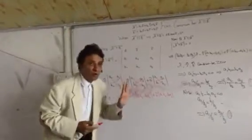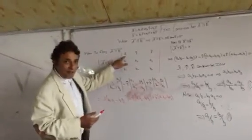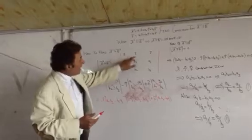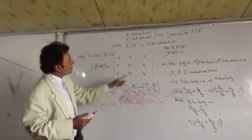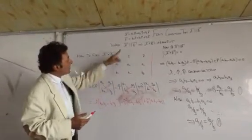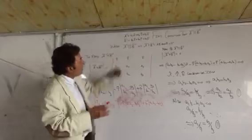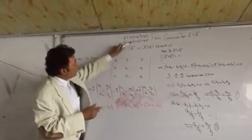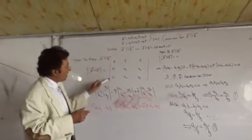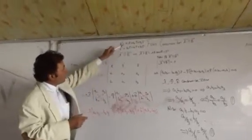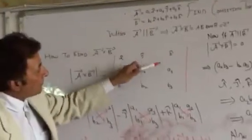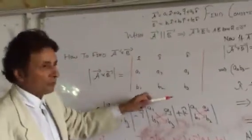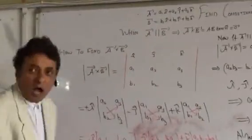The two lines are called a determinant. We write i cap, j cap, k cap. Now the coefficient of i cap: a1, b1; for j cap: a2, b2; for k cap: a3, b3.